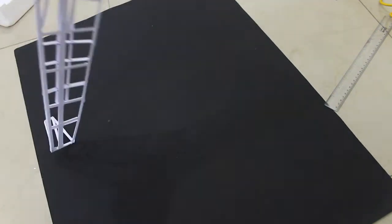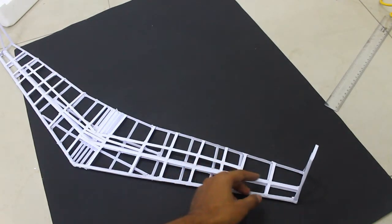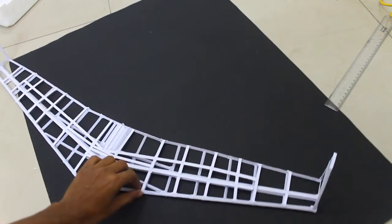So I have used around 6 sticks near the root to take all this bending load and around 5 sticks near the tip, so that way it can withstand all bending load while flying.